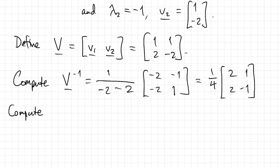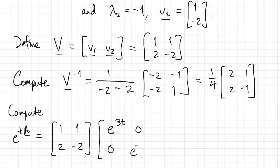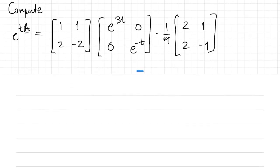And now the matrix exponential is V times the diagonal matrix of eigenvalue exponentials. You want to take those eigenvalues in the same order as the eigenvectors for this to work. And then we have V inverse.